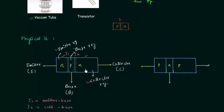I will explain these things in great detail in the coming presentations. The same applies to the PNP transistor — this terminal is the emitter terminal, this terminal is the collector terminal, and this terminal is the base terminal.